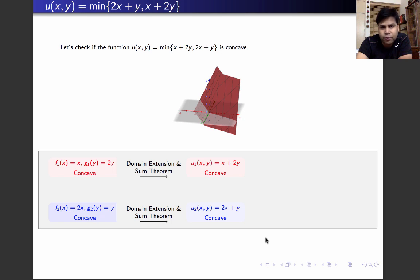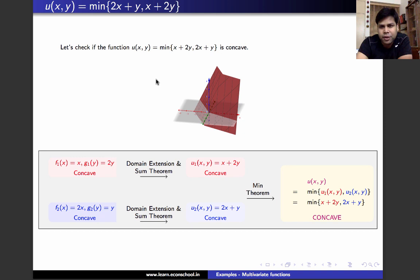Now, where are we going to go from here? Well, we know that x plus 2y is a concave function. 2x plus y is a concave function and we also know the min theorem. So min of two concave functions is a concave function. Therefore, u(x,y) equals minimum x plus 2y comma 2x plus y is a concave function.